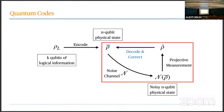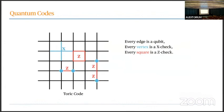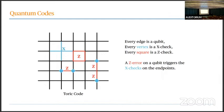For today's talk we'll focus on the decoding part. I'll illustrate a lot of these examples using the toric code — everybody's favorite code. The toric code is defined on a lattice where qubits sit on the edges, X checks on the vertices (each acting on the four adjacent edges), and Z checks on the squares. The decoding problem is: when a Z error happens on some edges, it flips the syndromes at the endpoints of those edges. This is the standard toric code error and detection model.